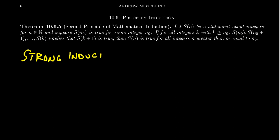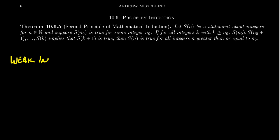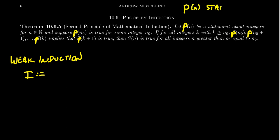Let me rewrite these principles of induction. We'll call the first principle weak induction, abbreviated I for induction. I'll use logical forms and relabel the statements as p — since I want to use S for strong induction in a moment. So we have this sequence of statements p sub n — a statement about n.